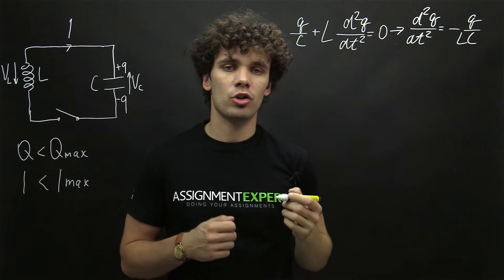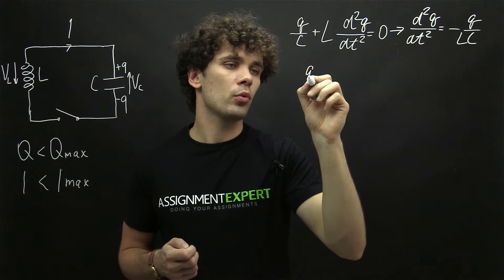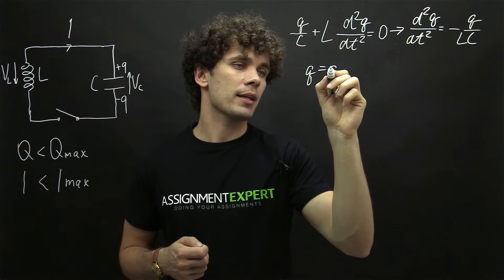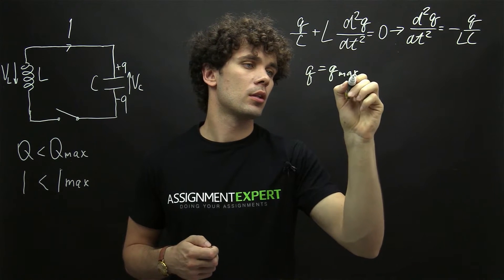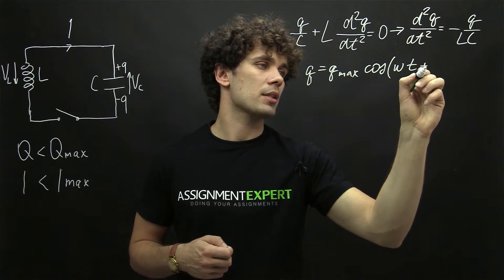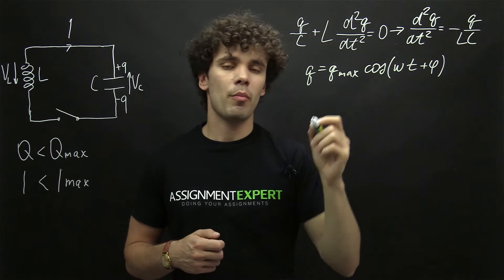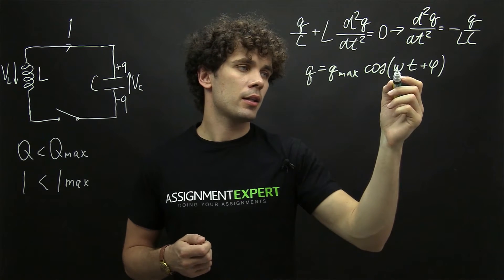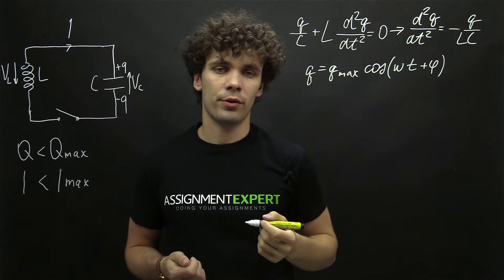Now this equation has the general solution in the form Q equals Q max times cosine of omega t plus phi, where Q max is the maximum charge of the capacitor, and omega is the angular frequency.